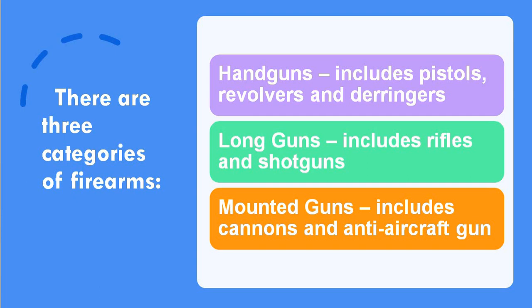From the term itself it's clear that handguns are easier to carry in hand — they include pistols, revolvers, and derringers. Long guns include rifles and shotguns. Mounted guns need a particular space to be set up and include cannons and aircraft guns.